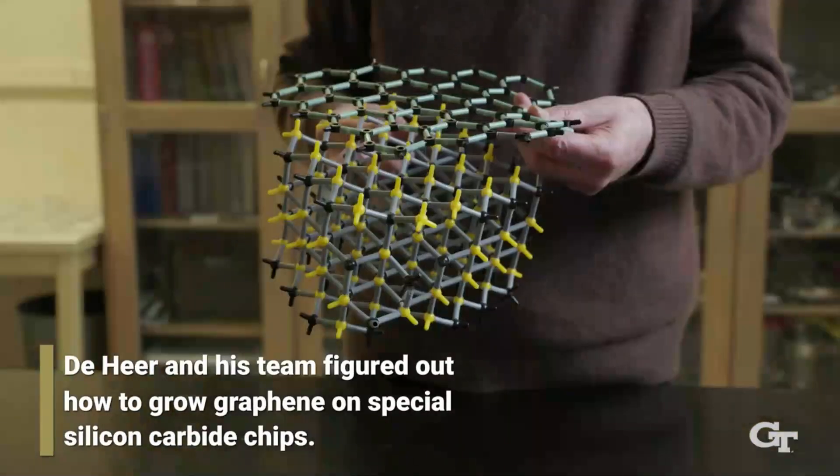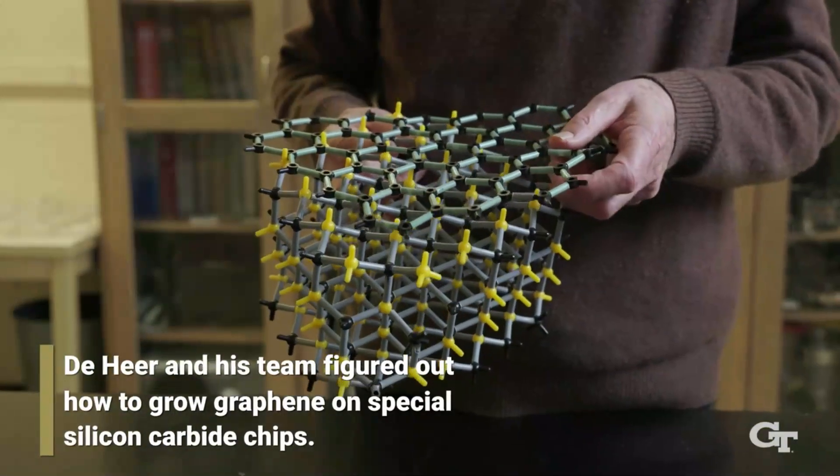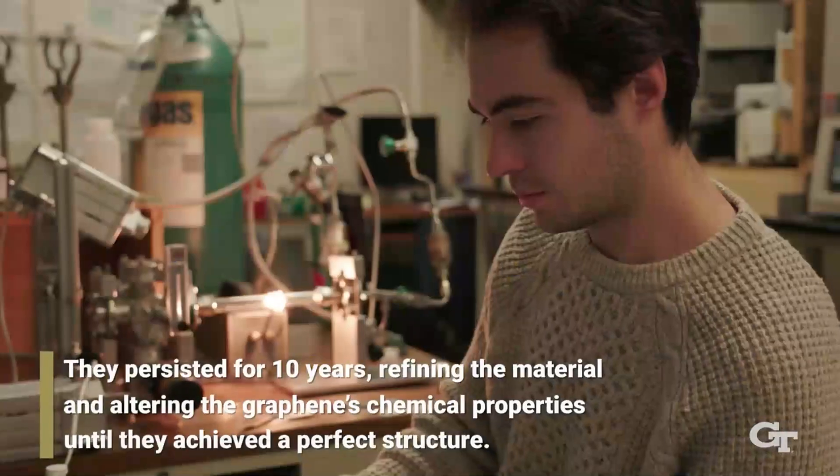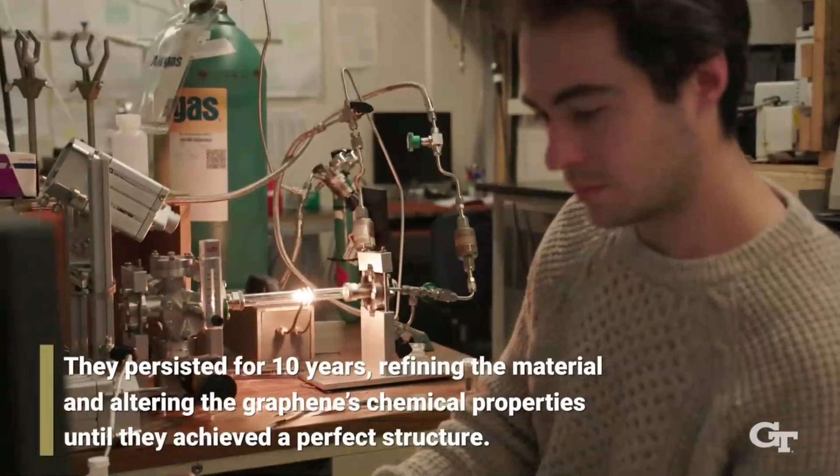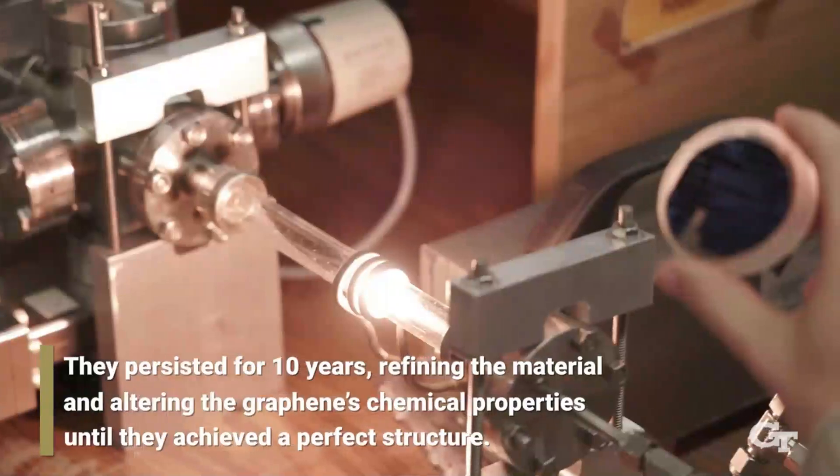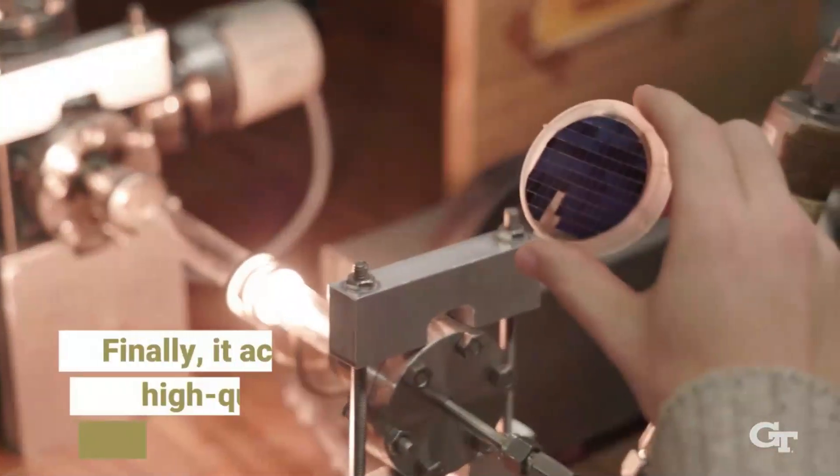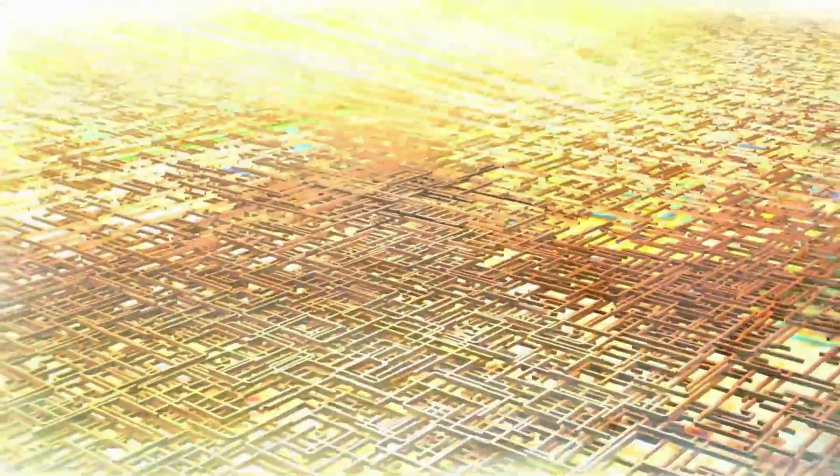The first functional semiconductor in history has been produced by Georgia Institute of Technology researchers using graphene, a single sheet of carbon atoms bound together by the strongest known bonds. Semiconductors are essential parts of electrical devices because they are materials that in certain situations carry electricity.